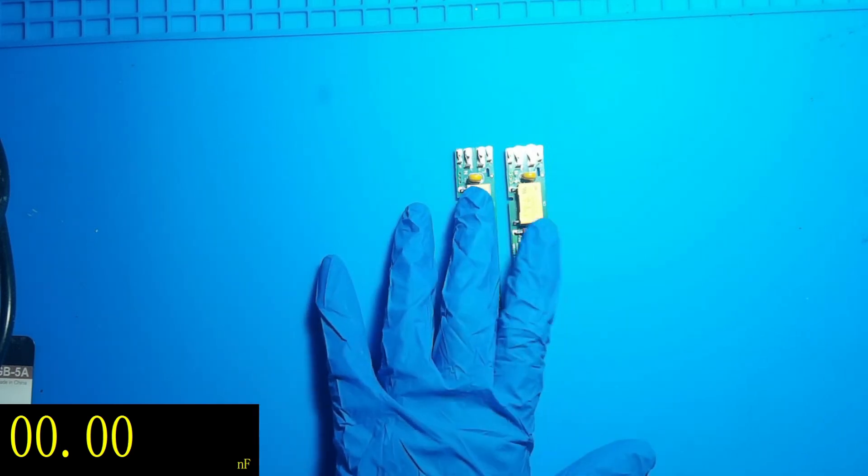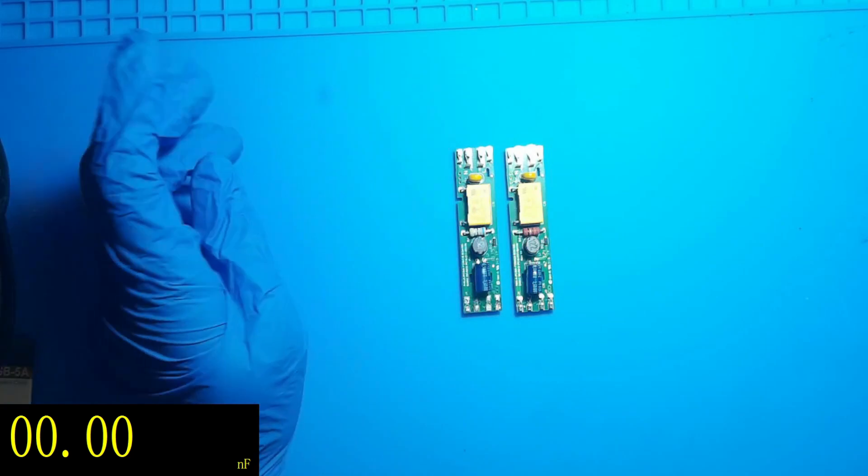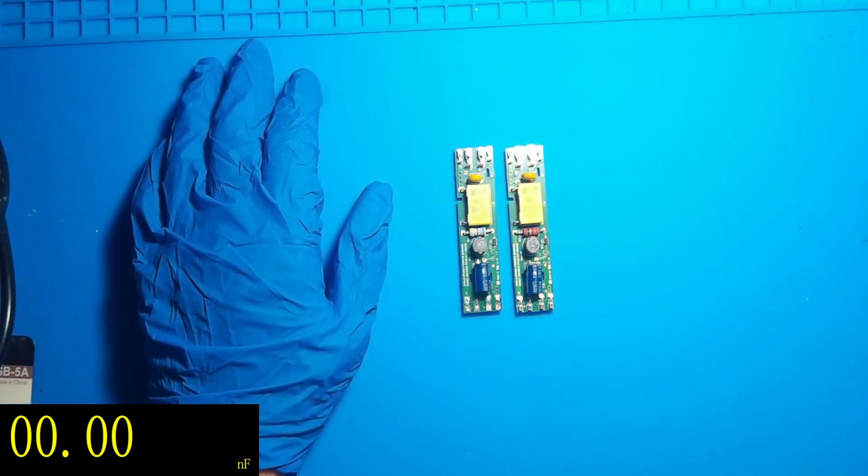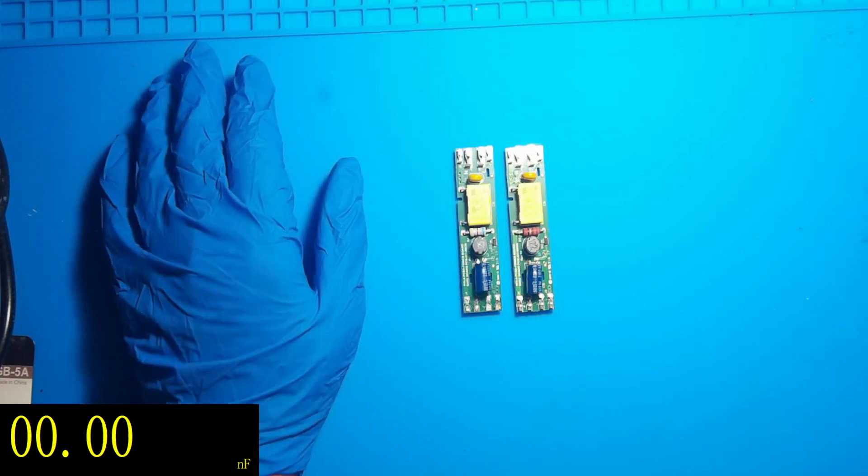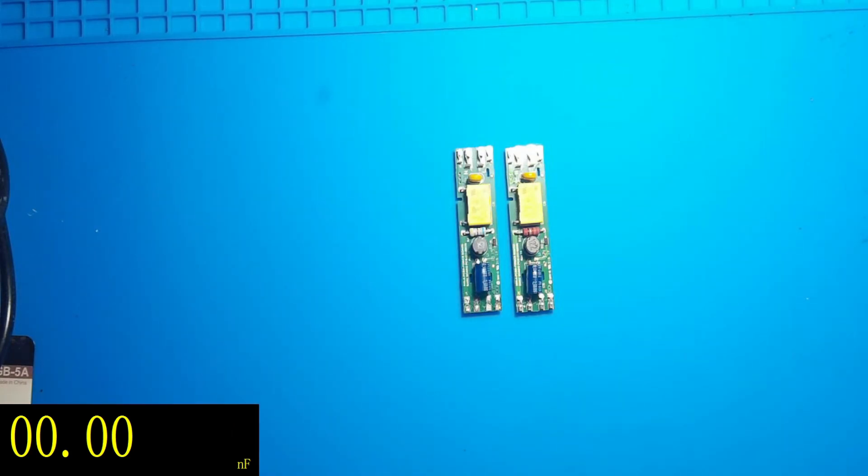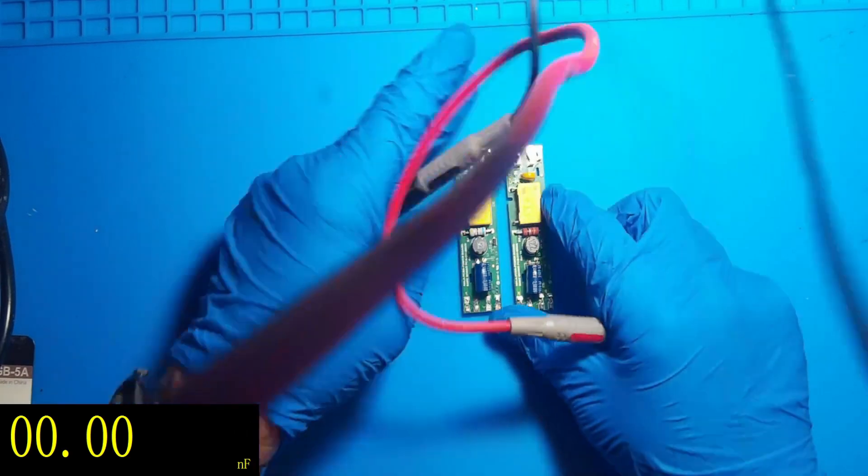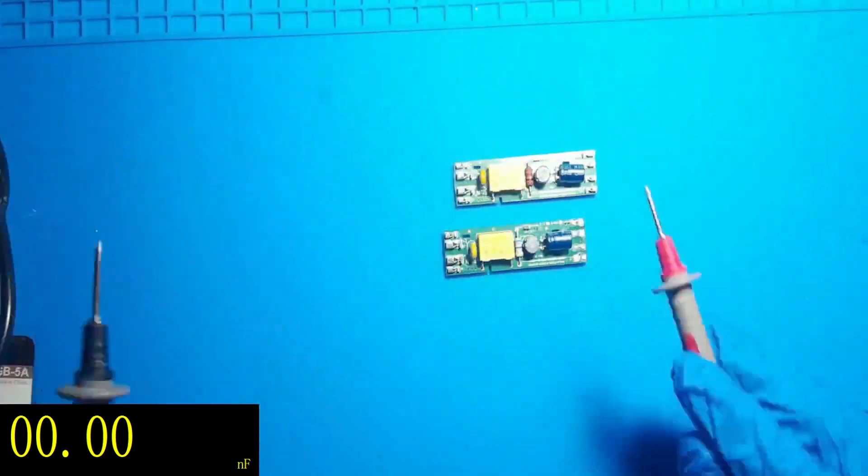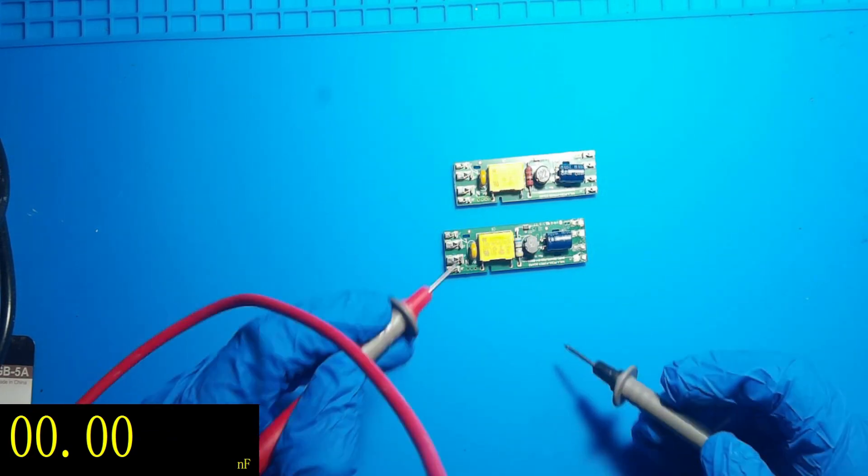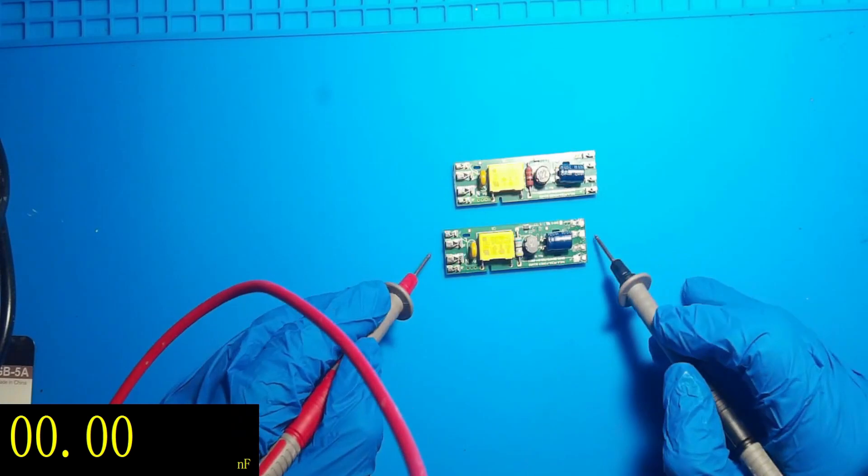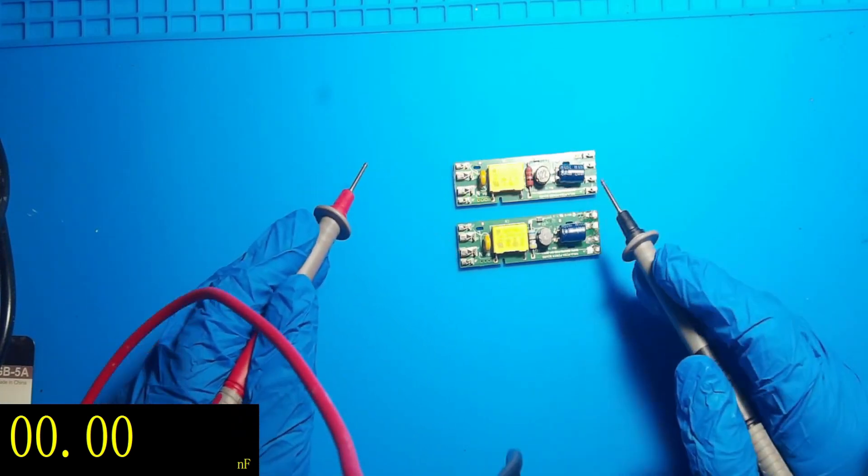I've got two boards here, these are from the GHD gold range. I have my meter in capacitance mode. The first thing I'm going to do is we're looking at this nice big yellow capacitor. On this model it has a history of going wrong, and I know one of these boards it has gone wrong.